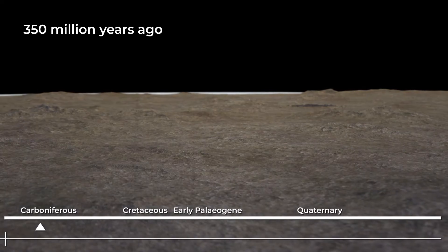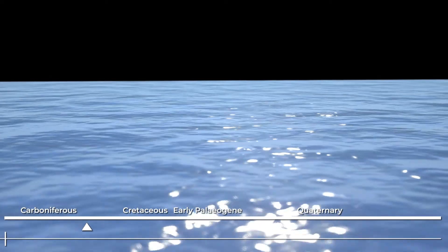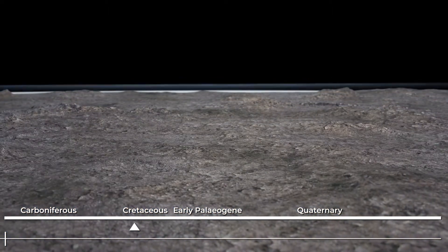About 100 million years later during the Carboniferous period, warm shallow seas covered most of Ireland and allowed for the deposition of limestone.